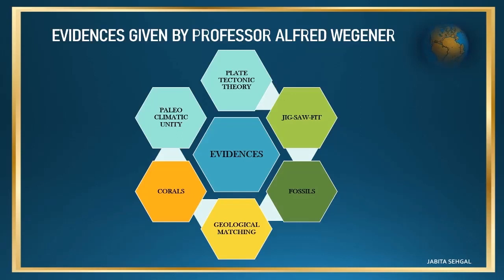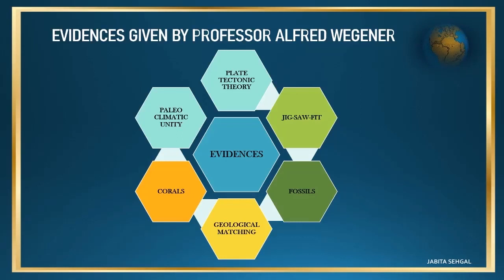This forced Wegener to do research and gather evidence to prove his theory. Now let's see the evidences collected by Wegener to prove his theory. The evidences are: jigsaw fit, fossils, geological matching, corals, paleoclimatic unity, and last but not the least, plate tectonic theory.